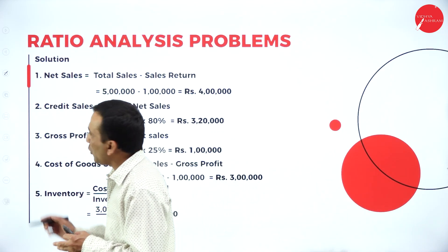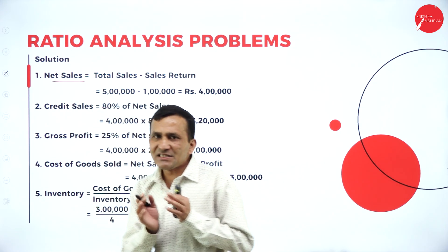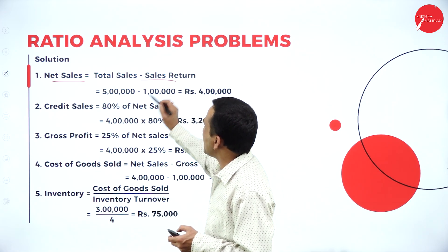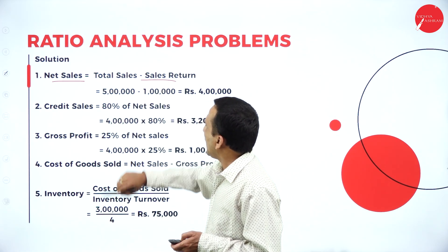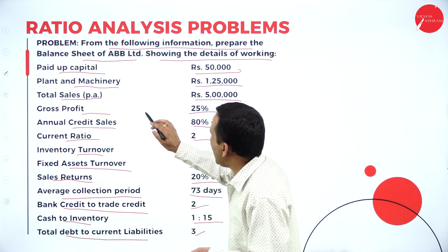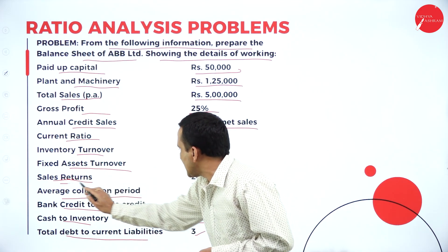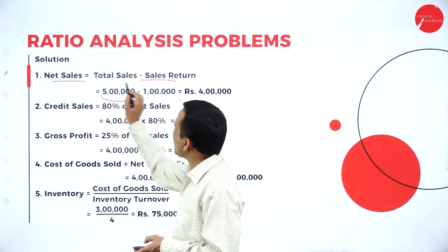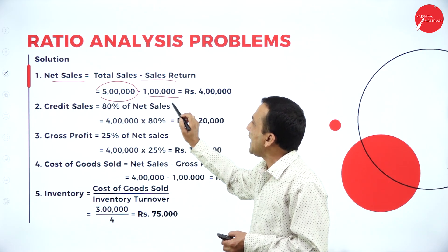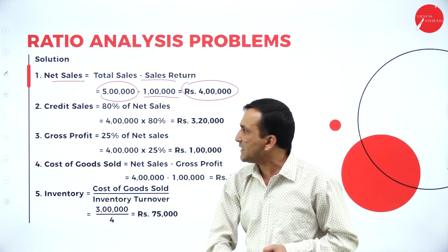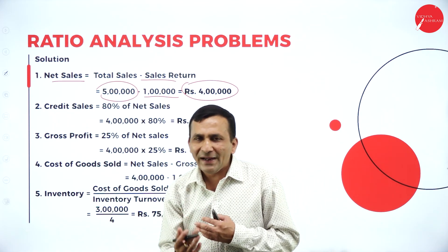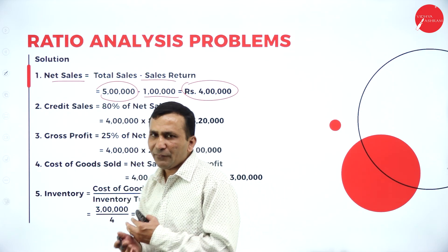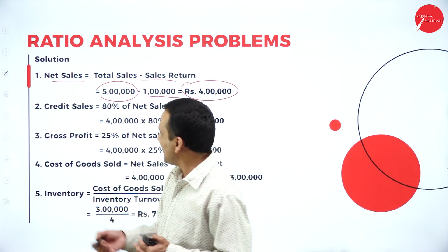First, we need to find out net sales: total sales minus sales return. Sales return is 20% of sales, so 20% of 5 lakhs is 1 lakh. After subtracting, net sales is 4 lakhs. Net sales is very important because any further formula that depends on net sales will use this value.